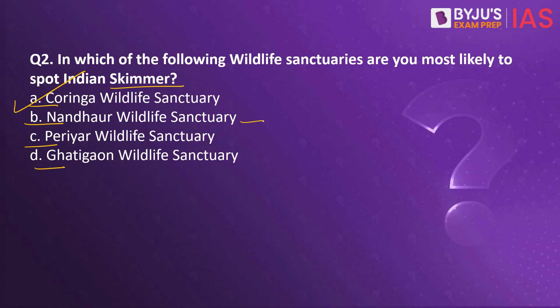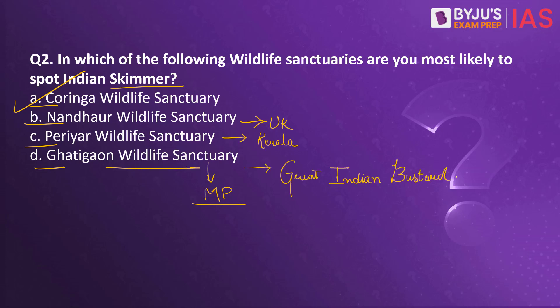Koringa Wildlife Sanctuary is a mangrove forest and estuary in Andhra Pradesh, so option A is the right answer. Nandhaur Wildlife Sanctuary is in Uttarakhand, Periyar is in Kerala, and Ghategaon Wildlife Sanctuary is in Madhya Pradesh. An important fact: Ghategaon Wildlife Sanctuary was established specially to protect the Great Indian Bustard.